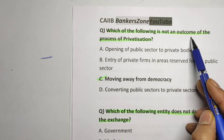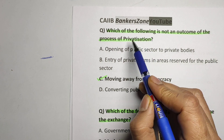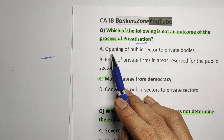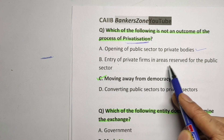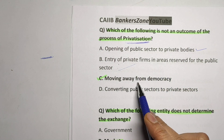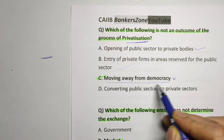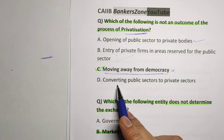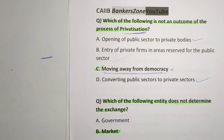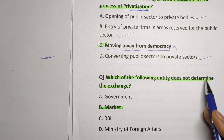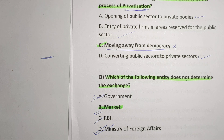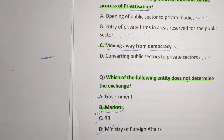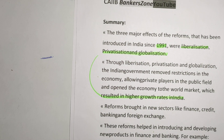A sample question: which of the following is not an outcome of the process of privatization? Opening of public sector to private sector — yes, it is an outcome. Entry of private firms in areas reserved for the public sector — yes. Moving away from democracy — that is NOT a feature of privatization. Converting public sector to private sector — yes, it is. Another question: which entity does NOT determine exchanges? Government, market, RBI, or Ministry? RBI, government, and the ministry are regulators, so only the market is not the determining authority.